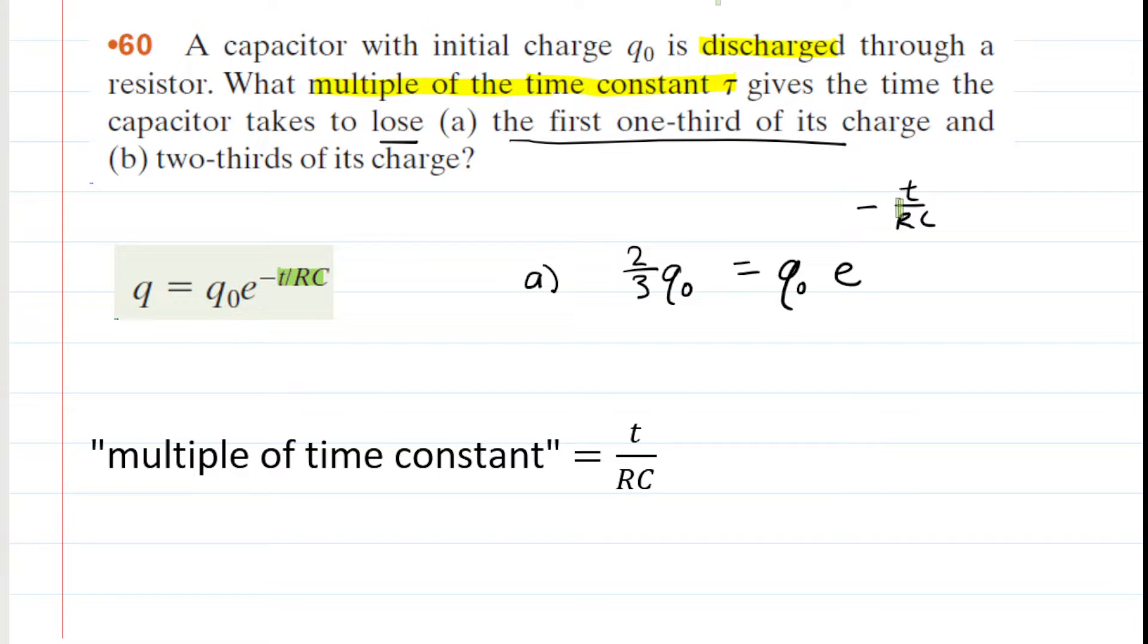Our goal is to isolate this ratio, t over RC. To do that, we're going to first cancel the q-naughts on both sides. You would divide both sides by q-naught, and that would effectively cancel them out. So now we have two-thirds equals that exponential term.